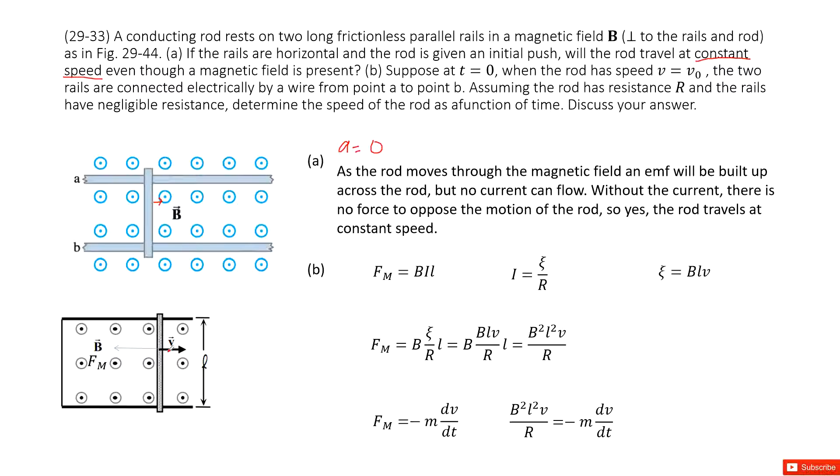How can we do that? We can see when this bar moves to the right, the magnetic flux in this loop will increase. Do you agree?